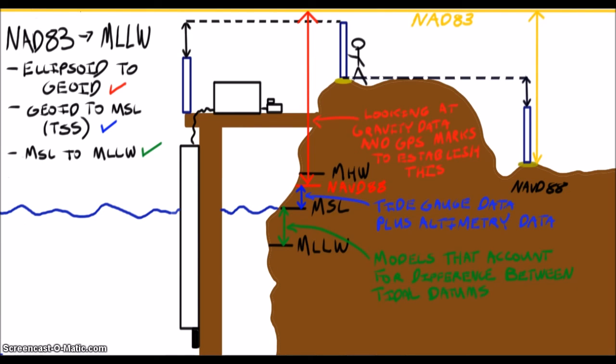These three models are used by Vdatum to make the transformation from NAD83 to mean lower low water possible. But what about when we work in Alaska or other areas where Vdatum doesn't exist yet?